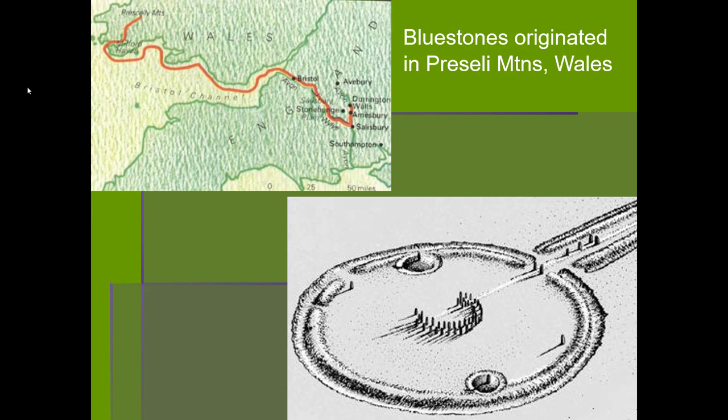The next slide shows the source for the blue stones. The blue stones came from the Preseli Mountains in Wales and were transported through the Bristol Channel and up the River Avon, then dragged a mile or so from the river to Stonehenge. In the lower right-hand corner, you can see a double horseshoe shape for the blue stones. They seem to have been relocated multiple times — in some cases taken to Blue Stonehenge for a while and then brought back.